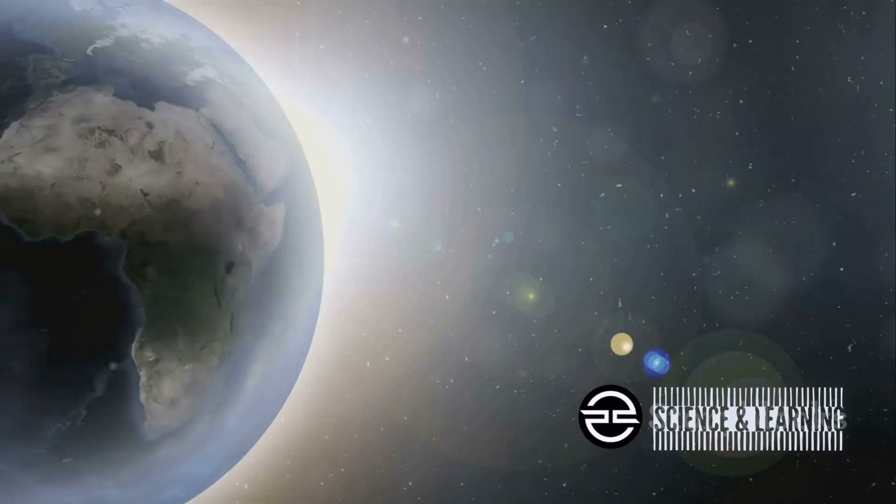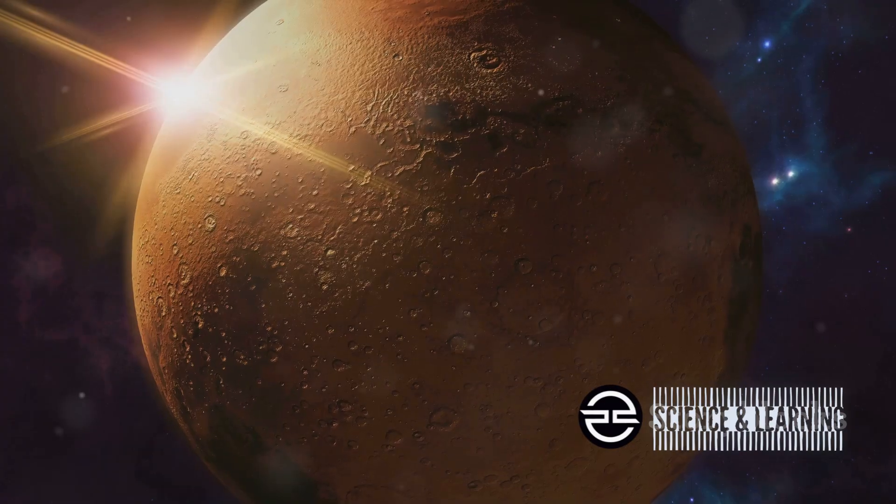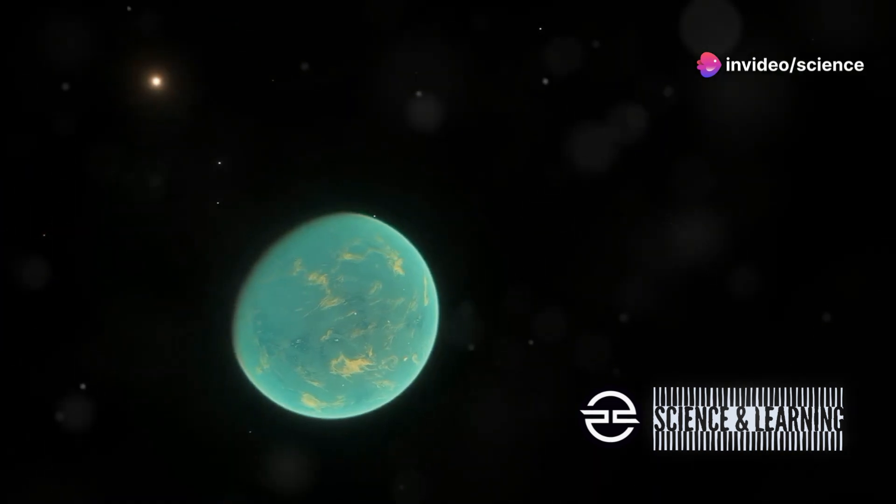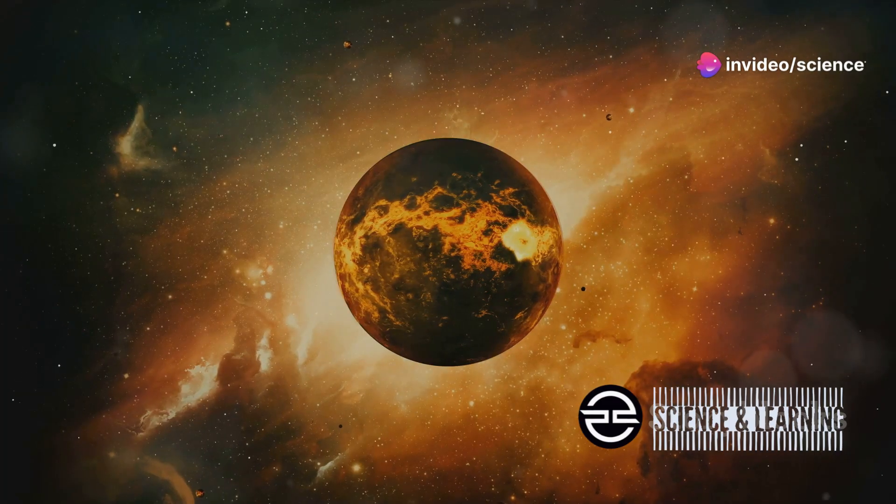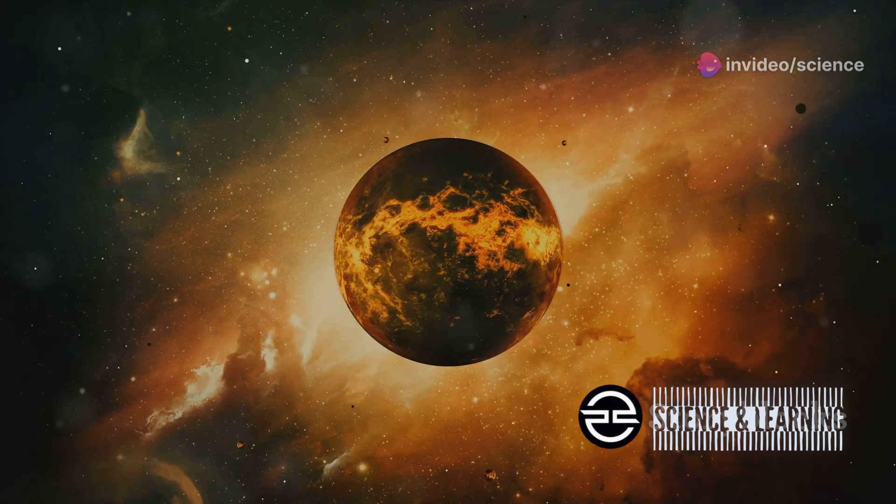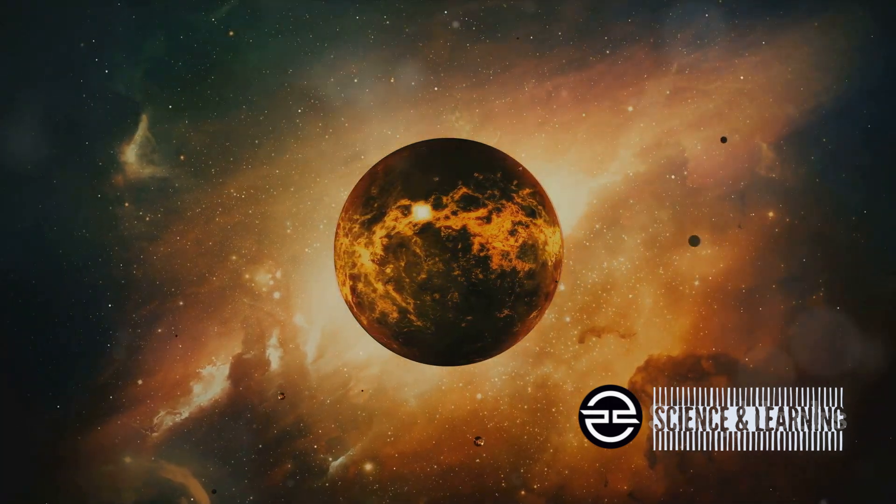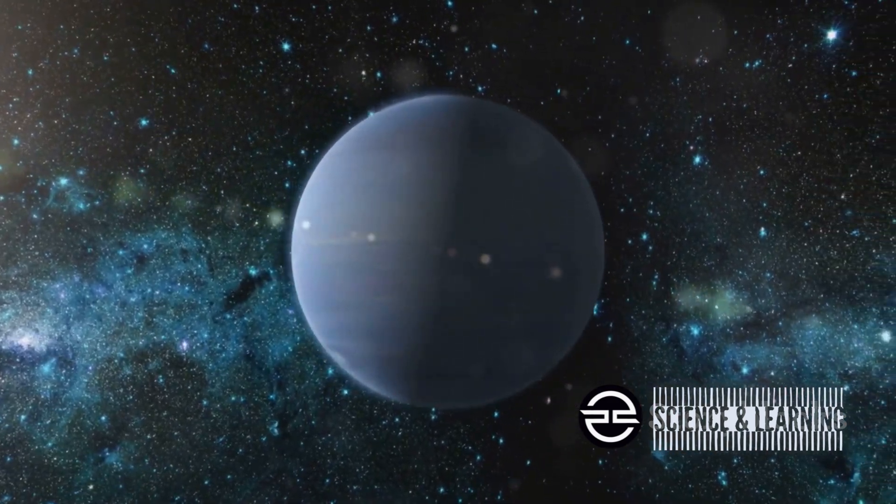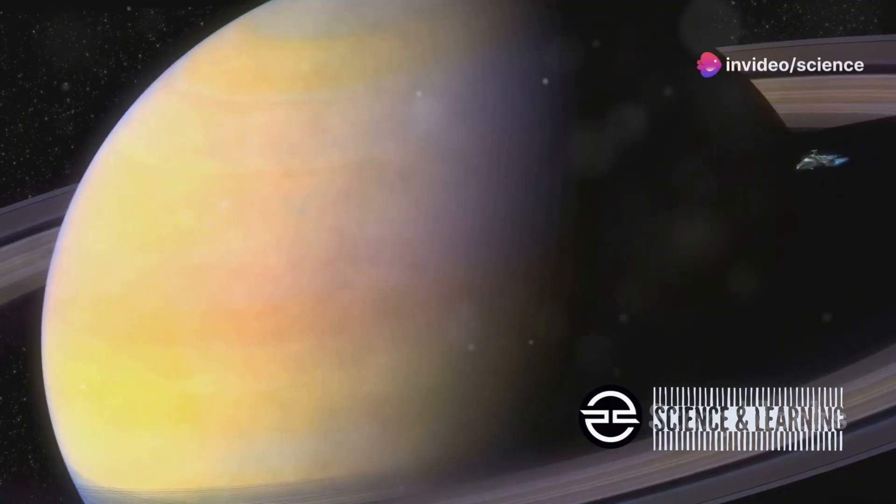Deep in the cosmos, orbiting a sun-like star, lies this new exoplanet. It's a bit bigger than Earth. It sits comfortably within its star's habitable zone. This means liquid water could exist on its surface, and where there's water, there could be life. The discovery has sent ripples of excitement through the scientific community.